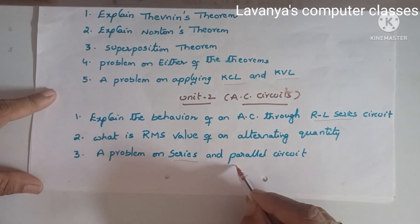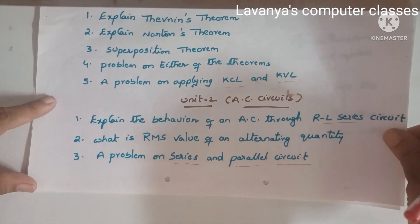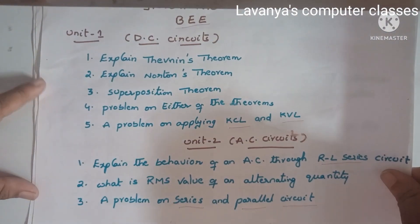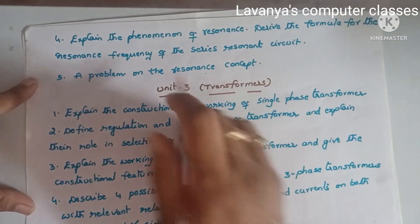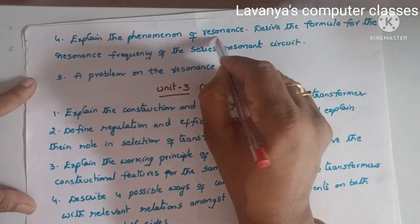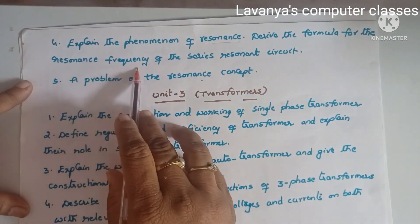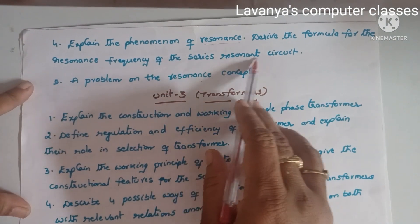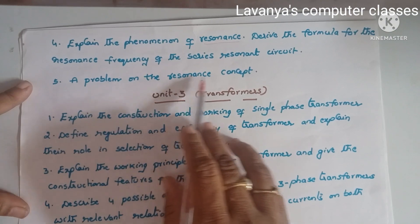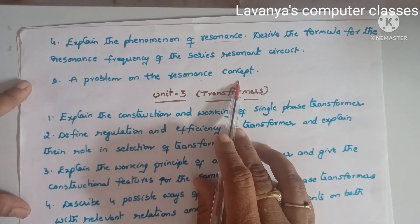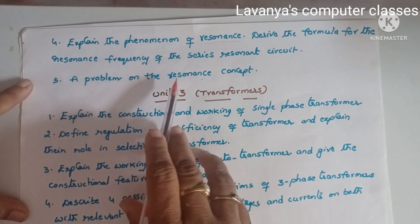Concentrate on what is a series and what is a parallel circuit, then concentrate on problems, because mostly problems are coming from BEE. Next important question: explain the phenomenon of resonance and derive the formula for the resonance frequency of a series resonance circuit. Read everything — what is resonance and resonance problems.